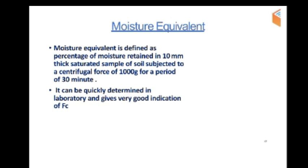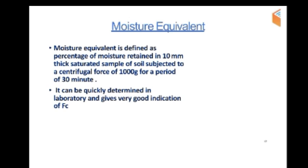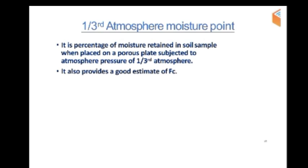Moisture equivalent can be quickly determined in the laboratory and provides a very good indication of field capacity (FC). The 1/3 atmosphere moisture point is defined as the percentage of moisture retained in a soil sample when placed on a porous plate and subjected to a pressure of 1/3 atmosphere. It also provides a good estimate of field capacity.